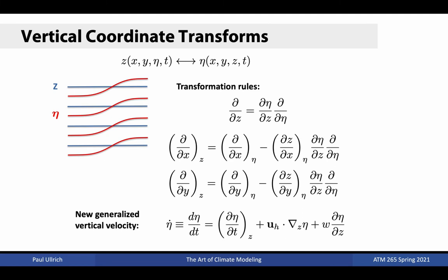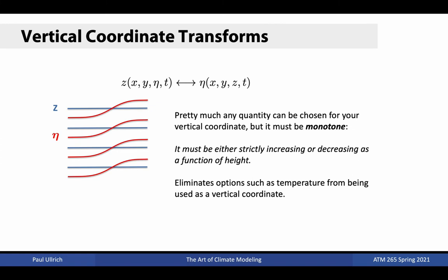These coordinate transforms are generally discussed in atmospheric dynamics when deriving the equations in a pressure-based formulation. For an arbitrary choice of vertical coordinate eta, the transformation rules needed are laid out on this slide. Essentially, any strictly monotone field could act as a vertical height coordinate, though obviously some choices make more sense than others. The monotonicity requirement does eliminate some variables from consideration, such as temperature, which can increase or decrease in the vertical.